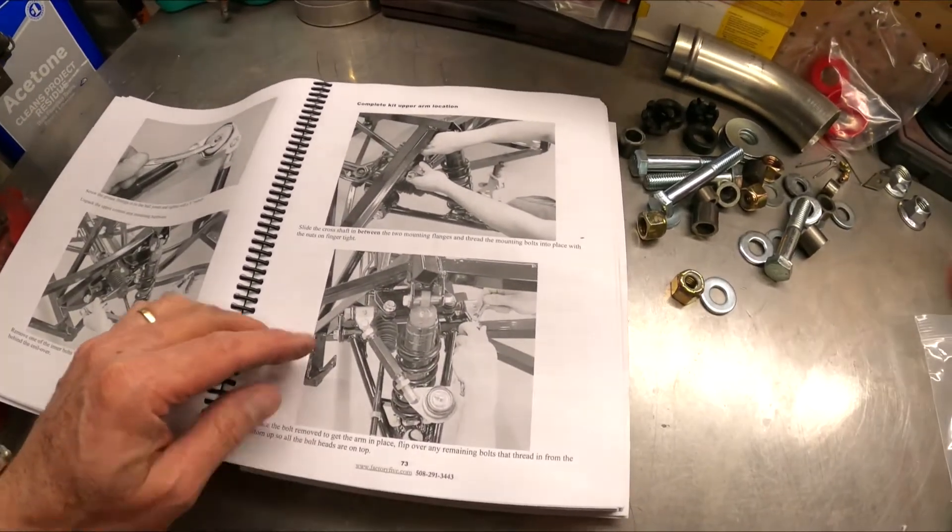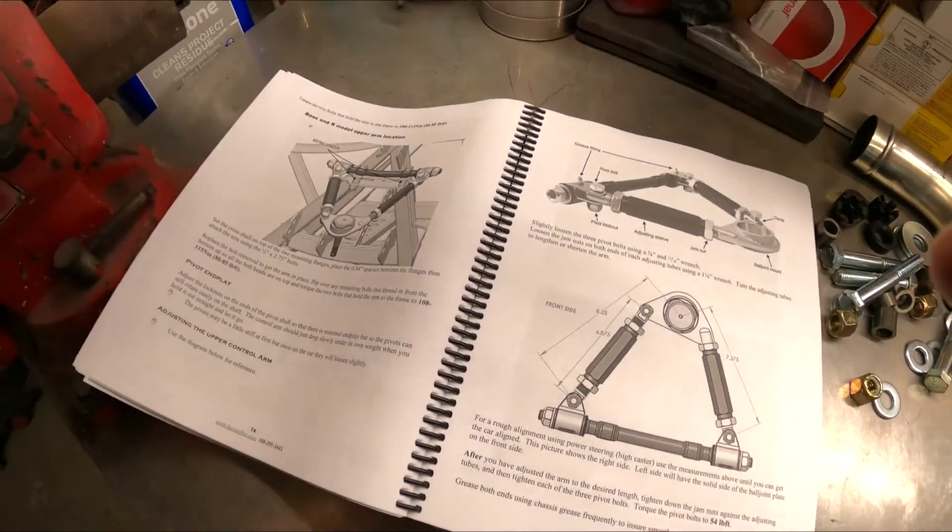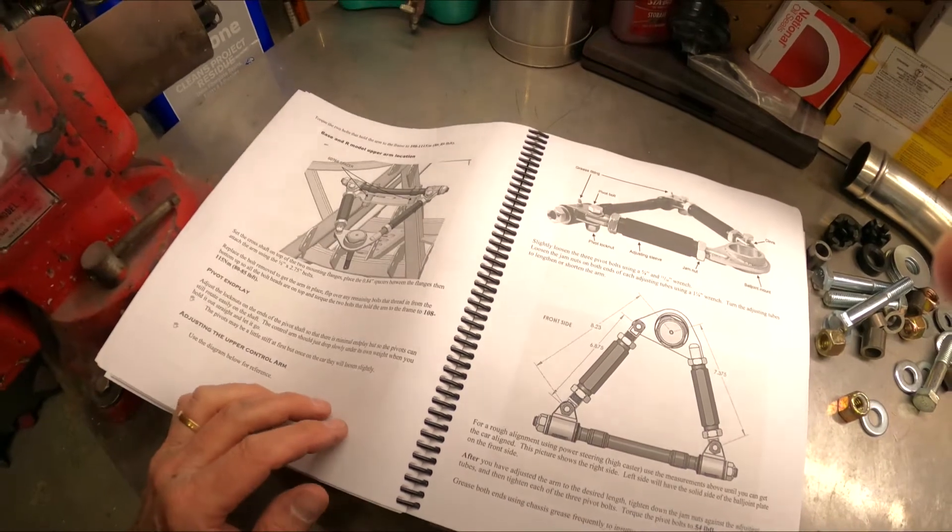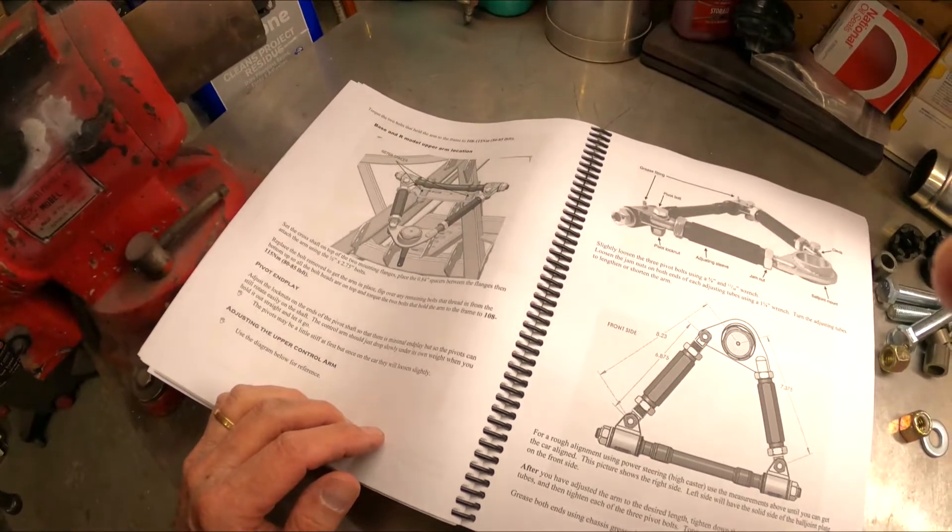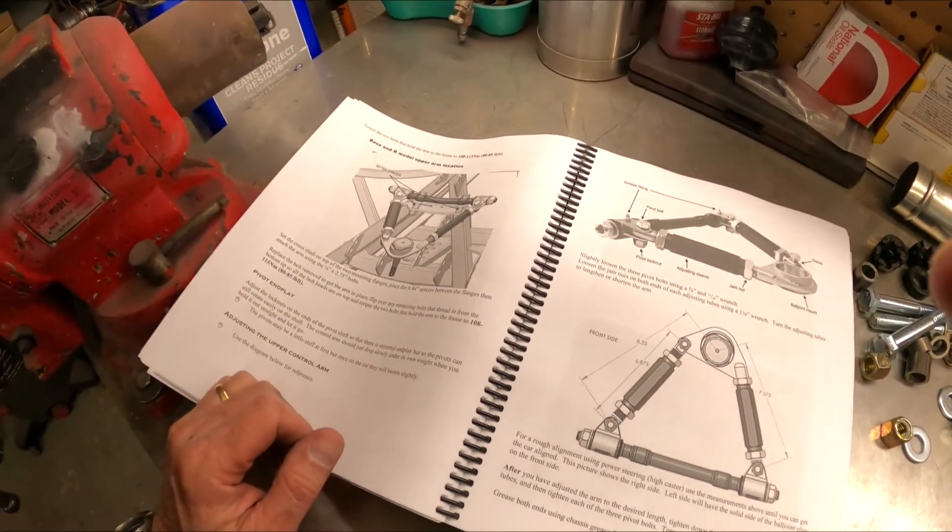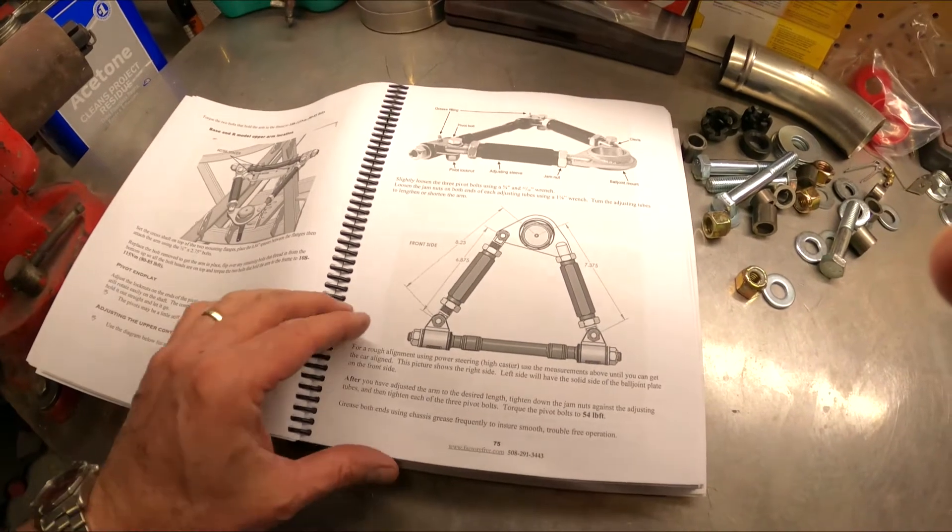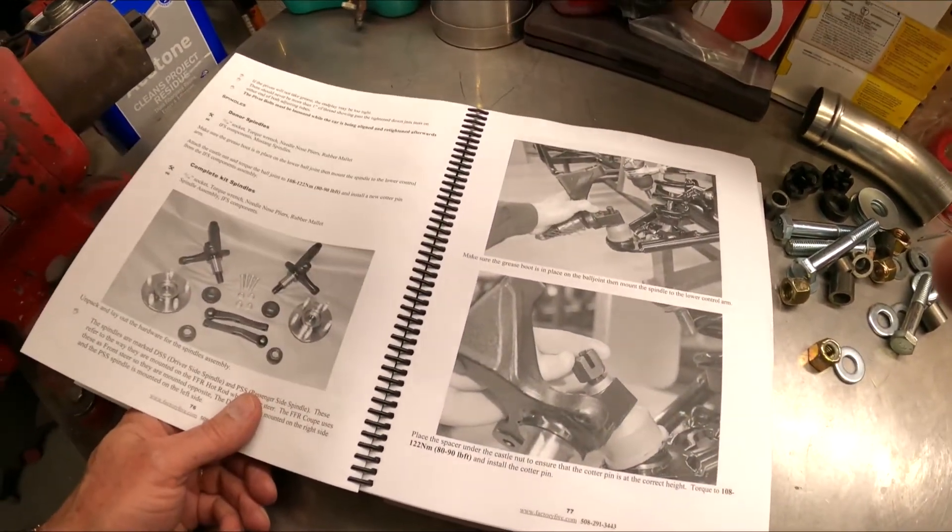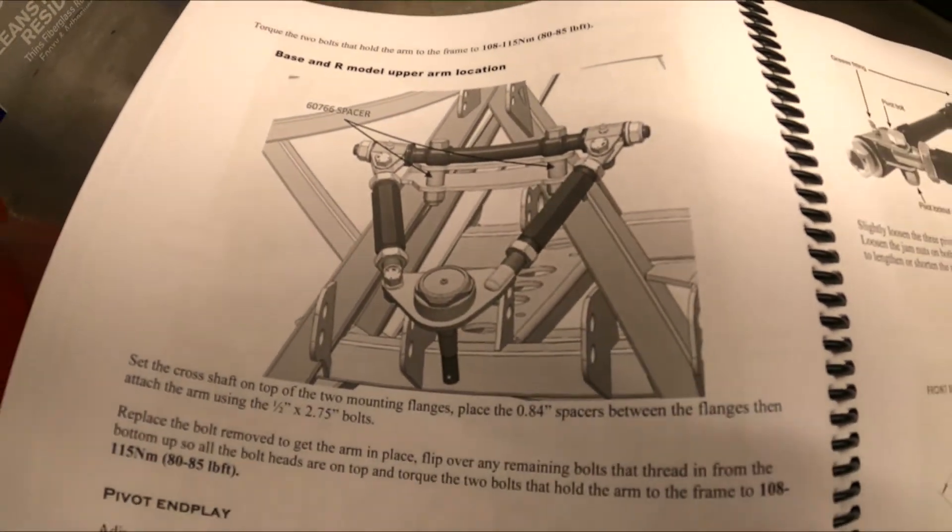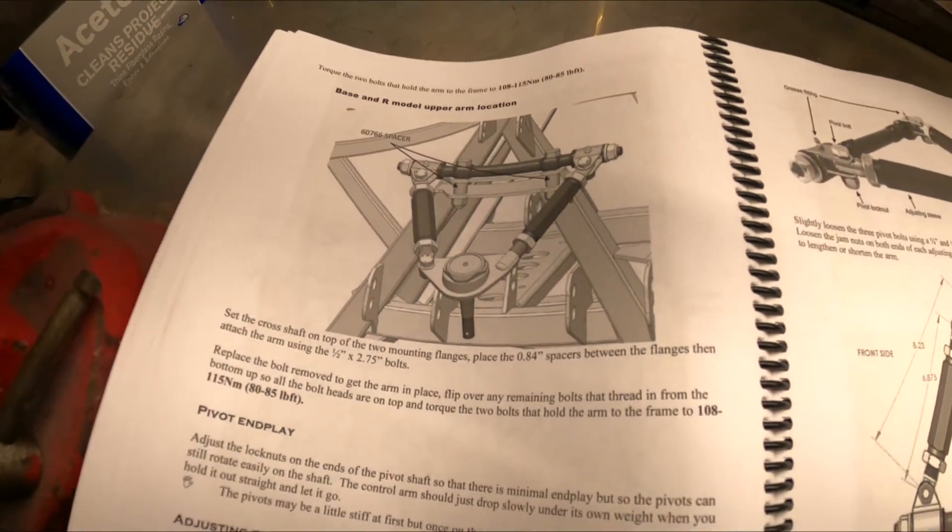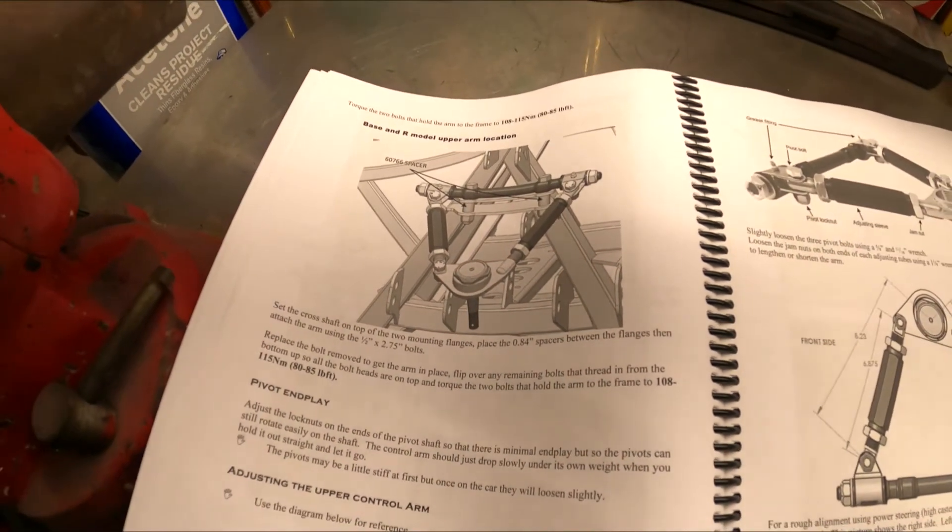Looking at the manual here, it says to put it between the two plates for the upper control arm, but then you see base and R model upper arm location. I'm going to keep it where it's at. I think that's if you use the upper hole for the lower control arm, but we're going to be using the lower hole. I don't want the car that low. We can always move it another time if we decide to. It says to torque the bolt that holds the arm to the frame to 80 to 85 foot-pounds. We'll do that next.